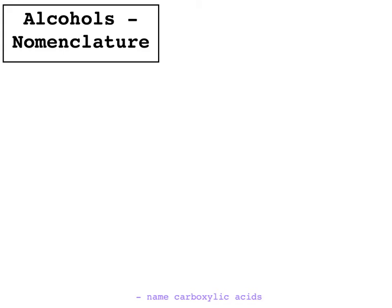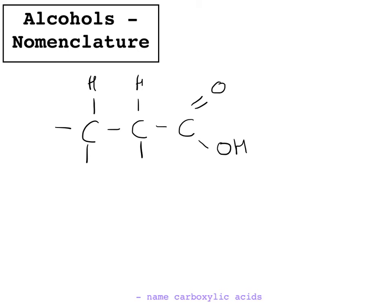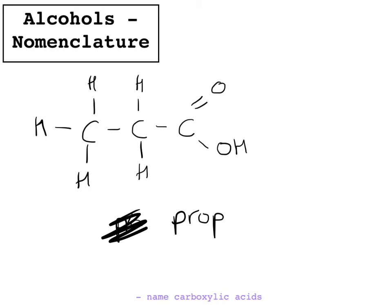Finally, we're going to name carboxylic acids. Again, you can only have the carboxylic acid on the end of the molecule. With the carboxylic acid, you've got a C double bond O-OH group — that is the functional group for a carboxylic acid. First, you name the number of carbons in the chain; we've got 3, so it's going to be prop-. For a carboxylic acid, the ending gives us propanoic acid.